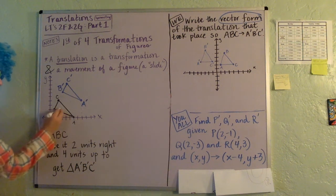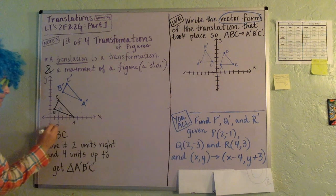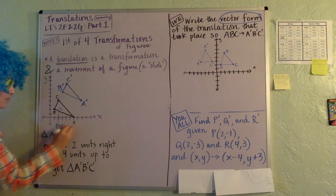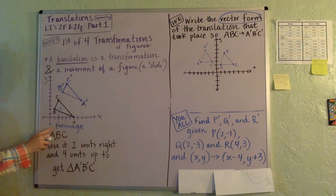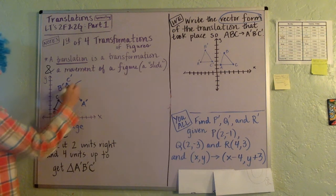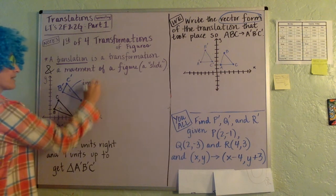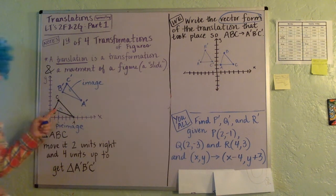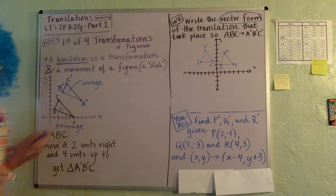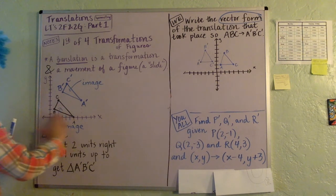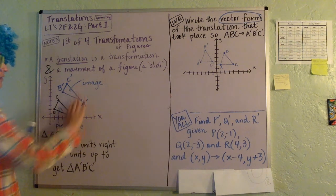Also another little bit of terminology here, this is what we call the pre-image. This is where we start, and this is called the new image where it lands, okay? So pre-image to the image where it stops. And again, this was a slide of two over and four up.